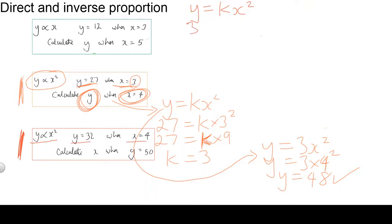So y is 32. k is, I don't know what it is, but we're going to find out. And x is given as 4. It's going to be 4 squared. So k is equal to, well, something times 16 to give me 32, is 2.